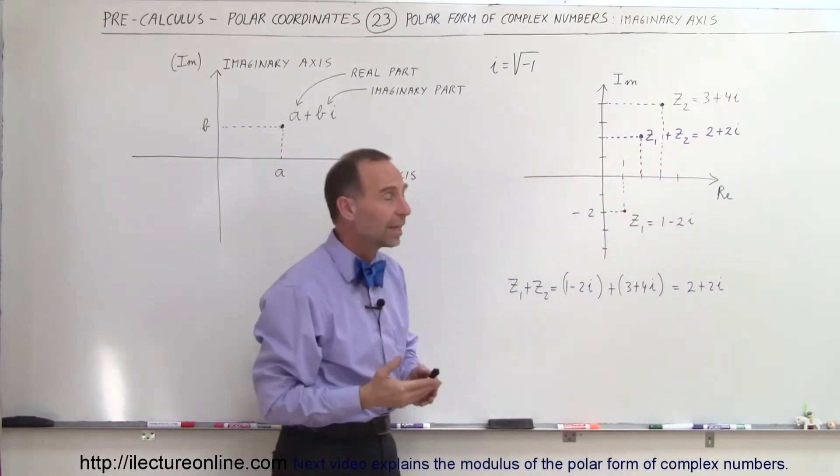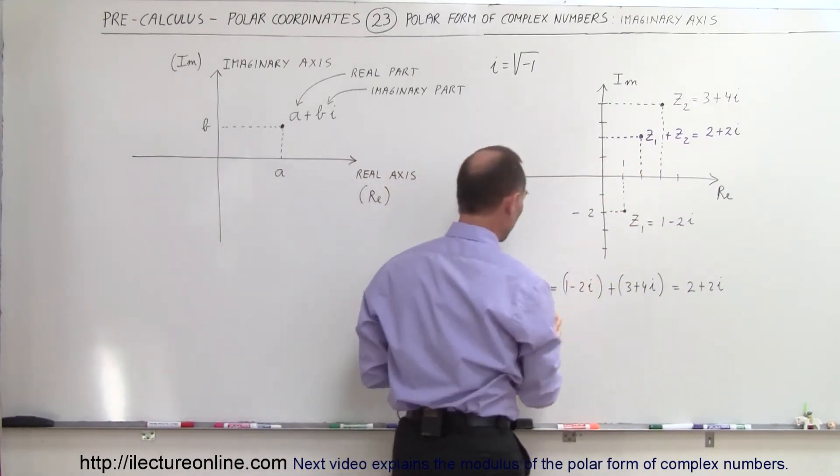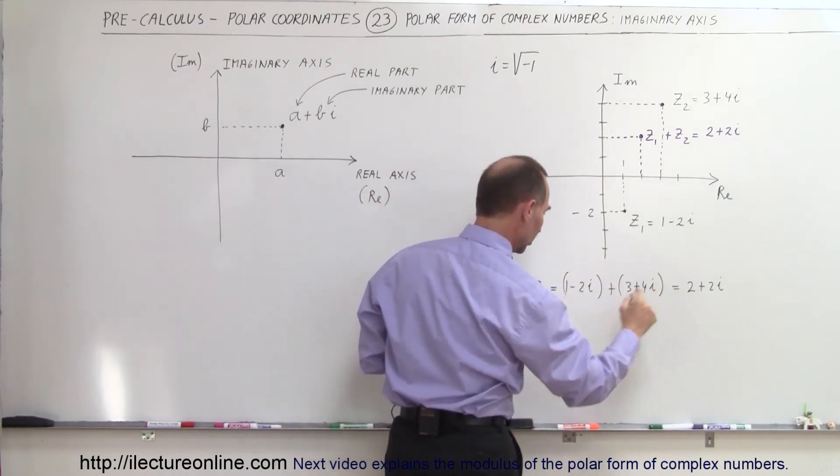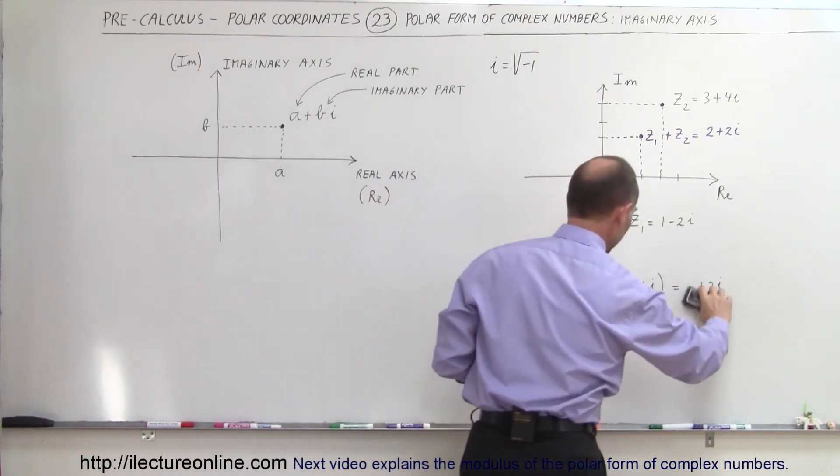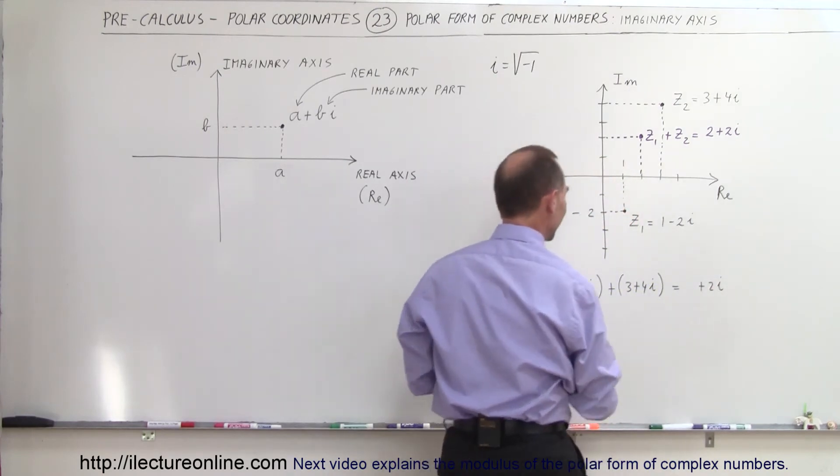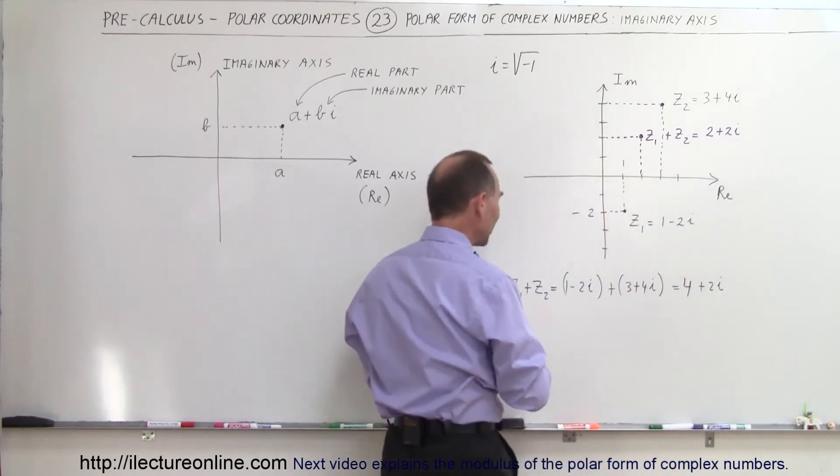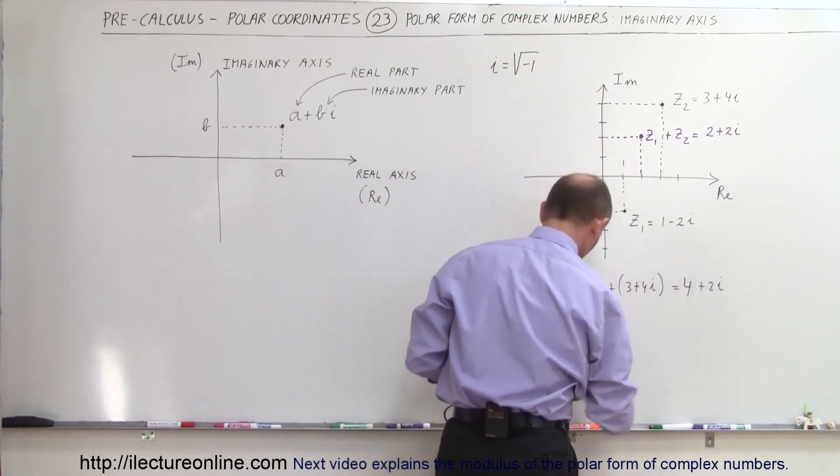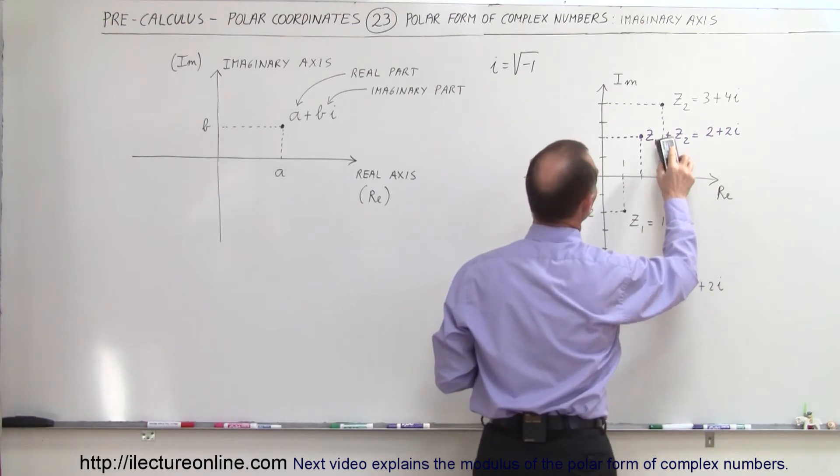What happens when we add those two together? Z1 plus Z2. When we add them together, we add the real parts together. 1 plus 3 is equal to—oh, I did this wrong, didn't I? 1 plus 3 is equal to 4. Good thing I checked. And then we add the imaginary parts together. Minus 2i plus 4i equals plus 2i.